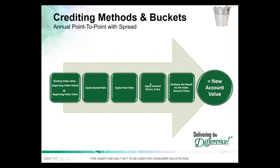The point-to-point with spread works the same way — ending value minus beginning value — then we apply the spread rate, which is the amount subtracted off the top. Then we look at the floor and add any bonus if applicable. That's how we determine the interest credit.